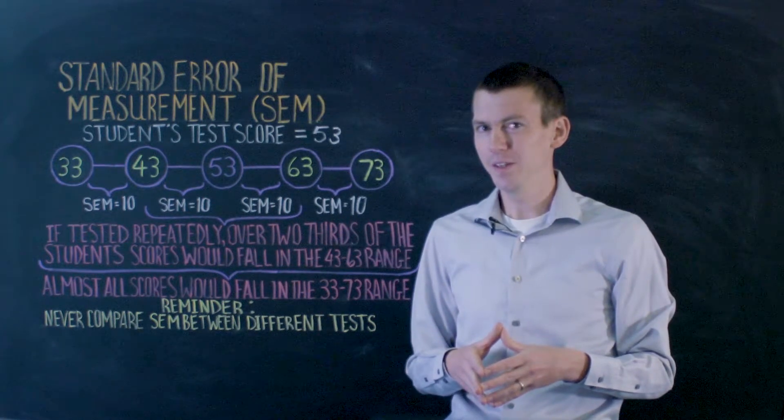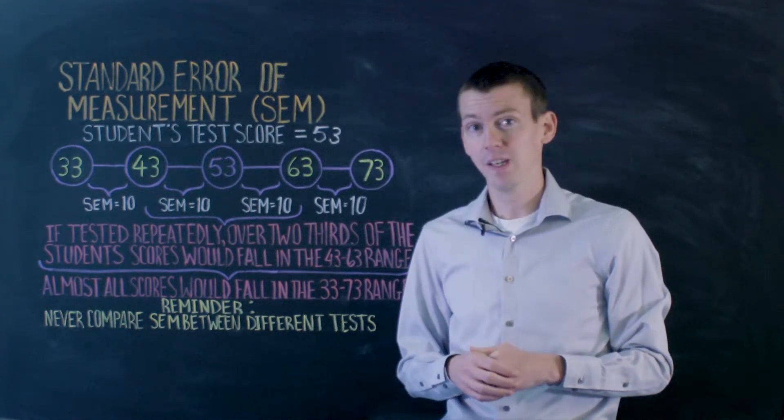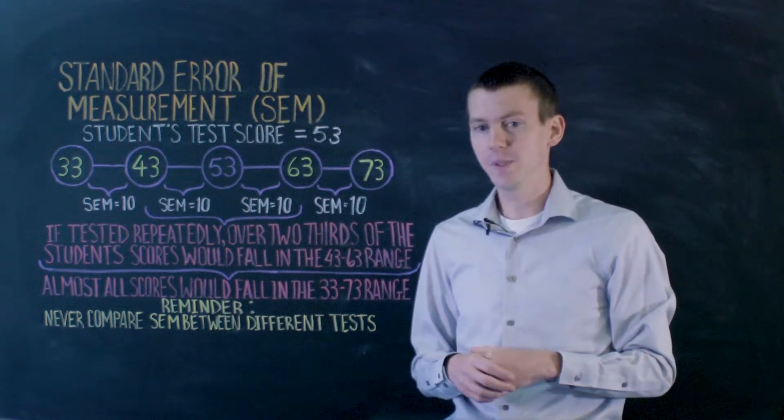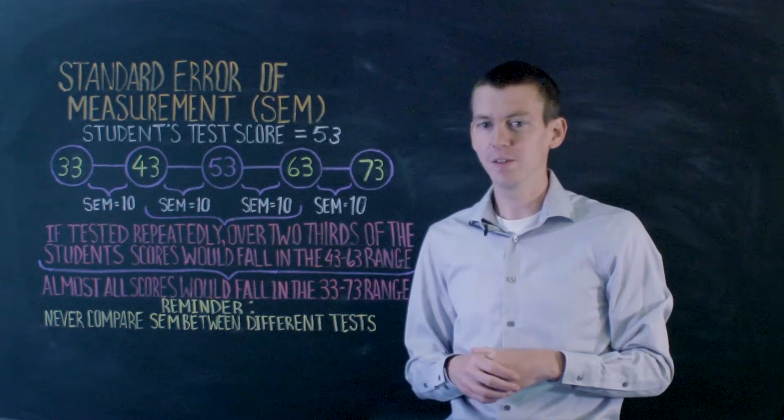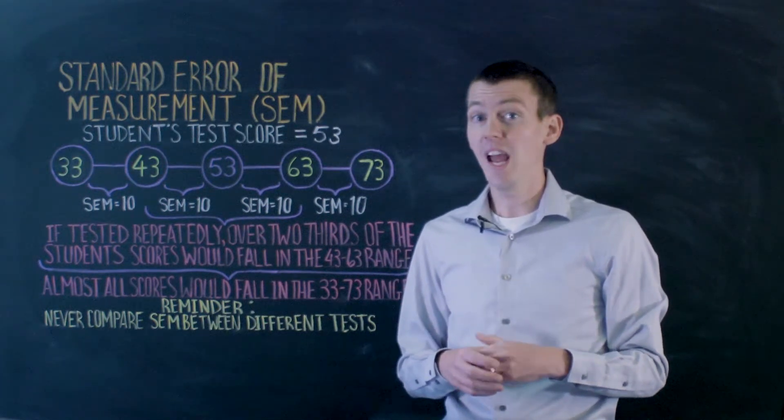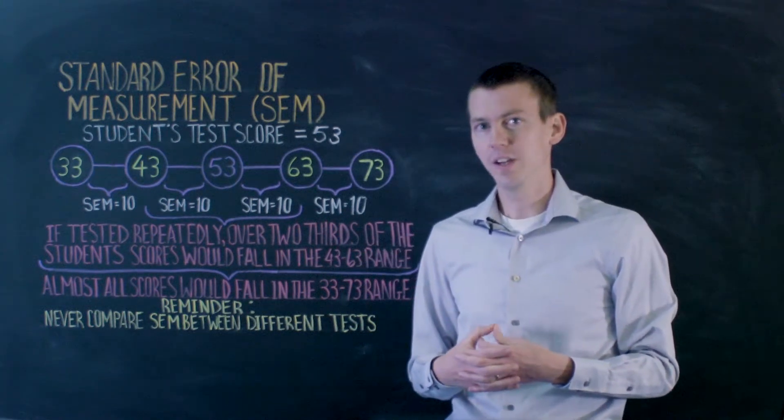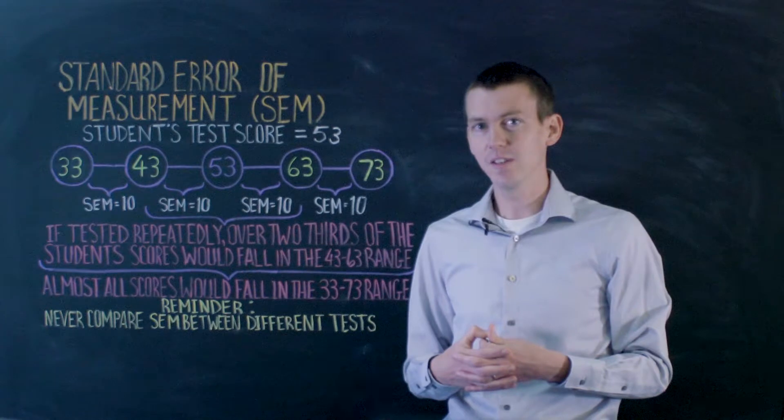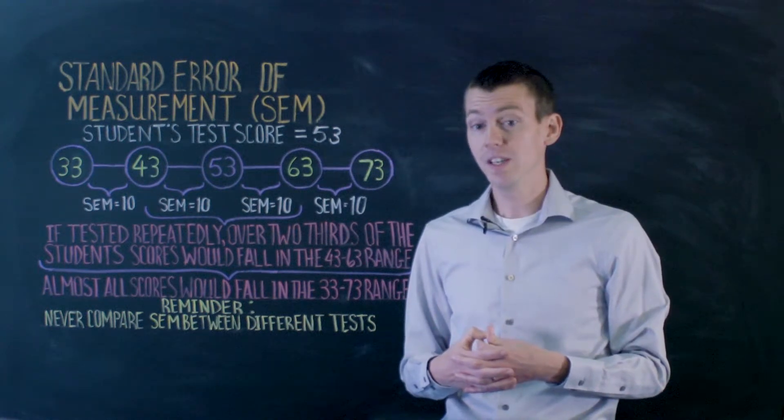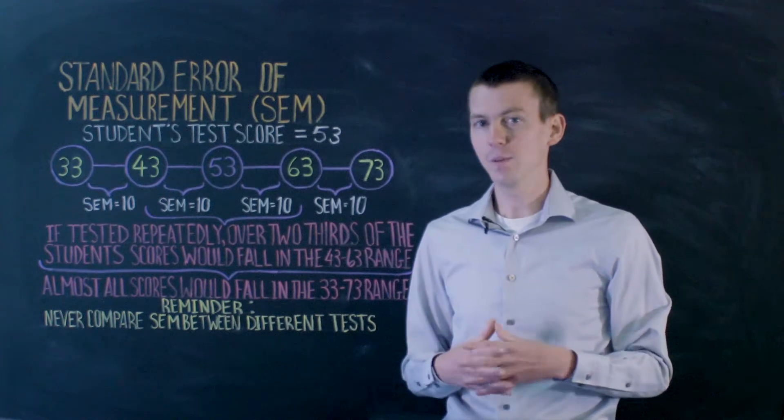There's one other thing I should tell you about standard error of measurement. There's actually two types. There's one called the global standard error of measurement, and there's another called the conditional standard error of measurement. The global standard error of measurement gives you an average of how all the students are doing on the test, where the conditional standard error of measurement is specific to each individual student, and it typically changes every time they take the test. Both of these can be useful for different purposes.